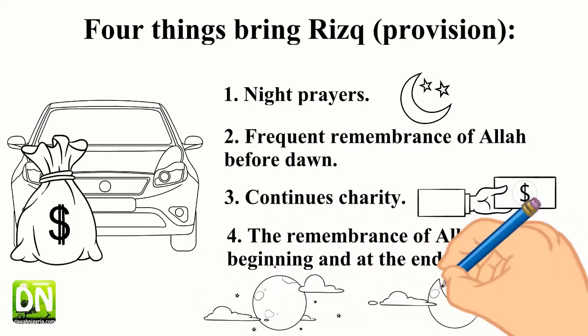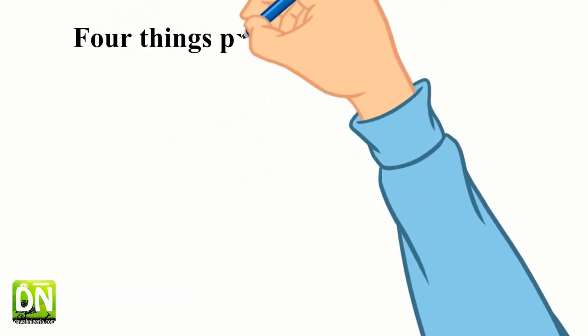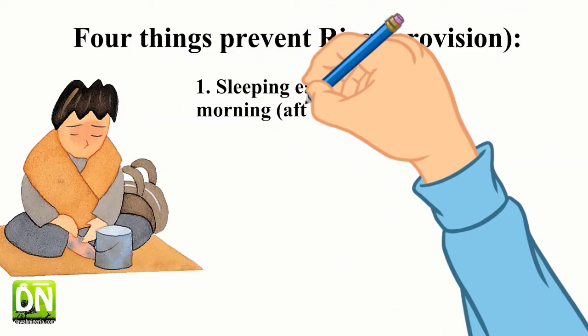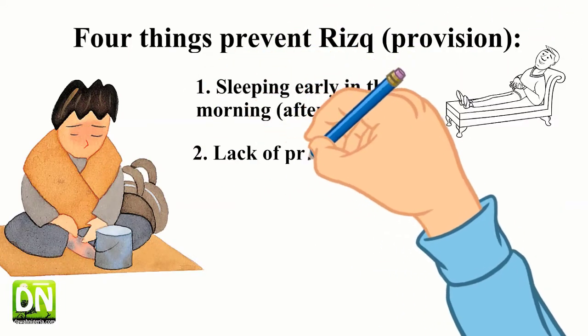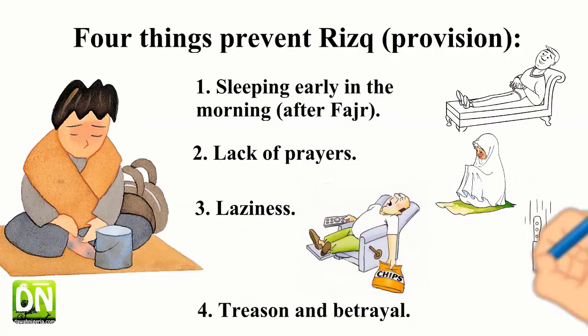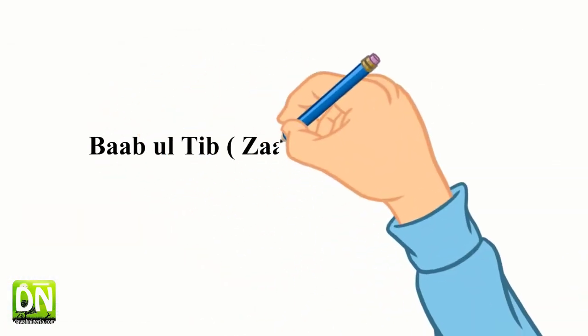Four things prevent rizq, or provision: sleeping early in the morning after Fajr, lack of prayers, laziness, and treason and betrayal. Source: Zad al-Ma'ad, 3/78, fourth edition.